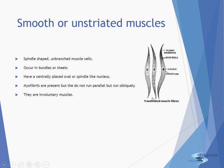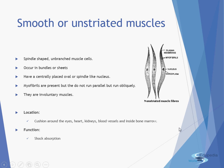Non-striated muscles are involuntary and not under our will. They are located forming a cushion around the eyes, heart, kidney, blood vessels, and inside the bone marrow. They help in shock absorption, insulation, and forming the body shape.